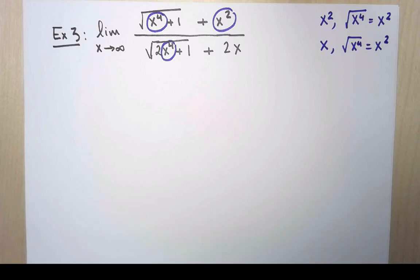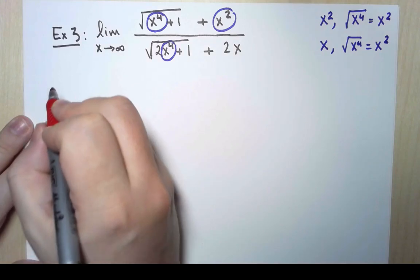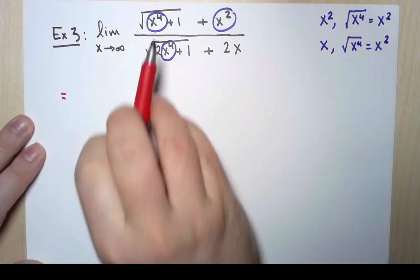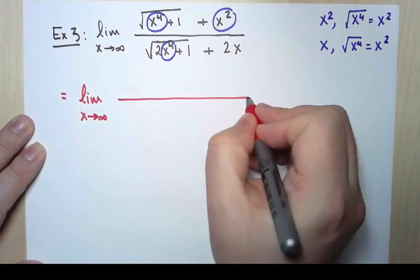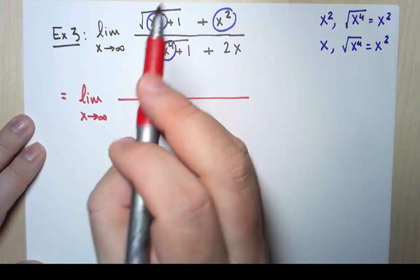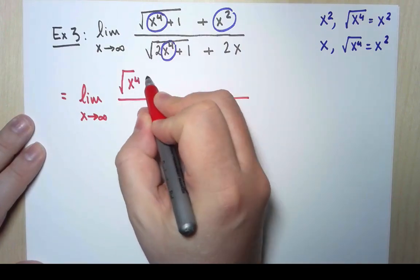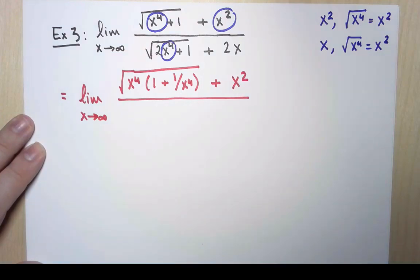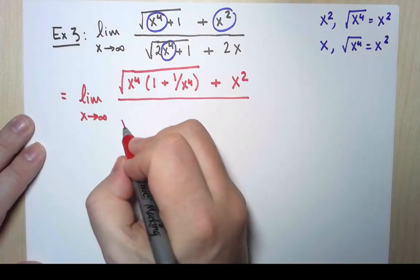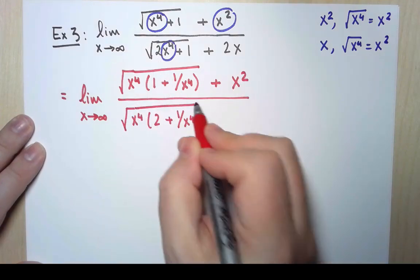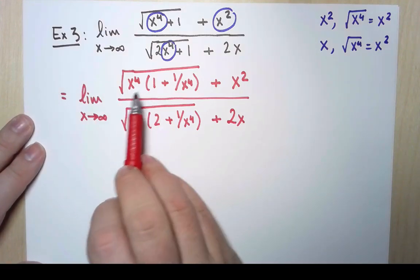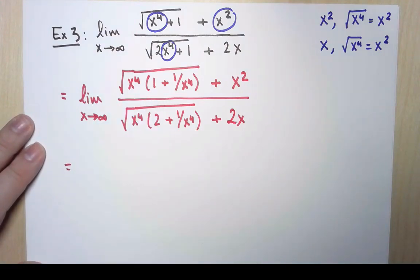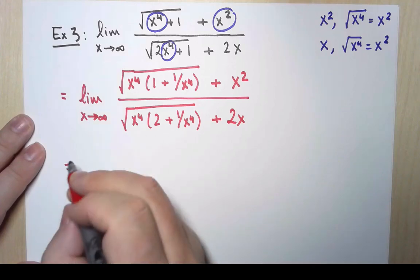I need to factor out the biggest term. I'm going to do this one slowly, because it's the first one, and I'm going to start by factoring out the term inside the square root. The biggest power inside the square root is x to the fourth. And the same thing happens at the bottom. Now, the square root of a product is the product of square roots, and the square root of x to the fourth is simply x squared.